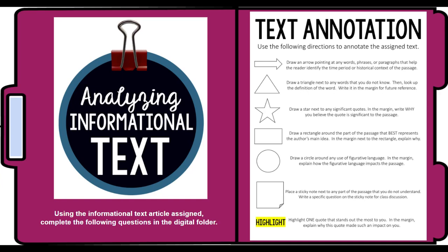So let's get through this together. Let's start by looking at what you're going to need to do. As we go through the text, you're going to annotate with different shapes. Number one: draw an arrow pointing to any words, phrases, or paragraphs that help identify the time period or the historical context of the passage. A lot of the things that we read don't just say 'this took place in 1945.' Instead, they reference certain historical events, and we need to be able to identify those.